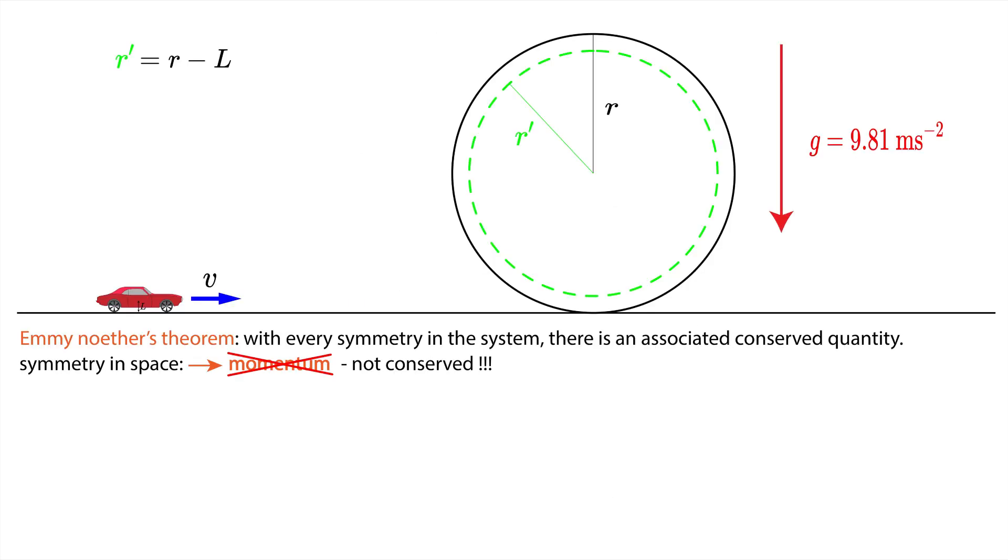Now let's talk about symmetry in time, and the quantity that is conserved under time translation symmetry is called energy. In this very simple example we have only two forms of energy we can think of, and it's kinetic energy and potential energy. It is very convenient to define the height of the center of mass of the car as h equals zero, because it is the lowest possible potential energy we can get.